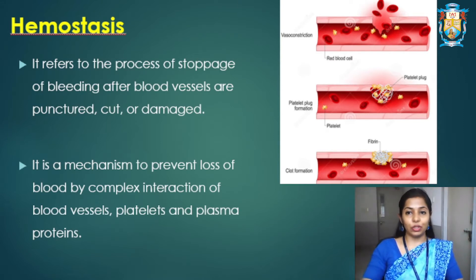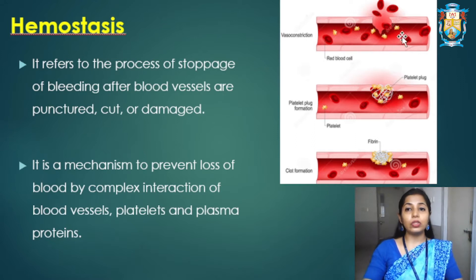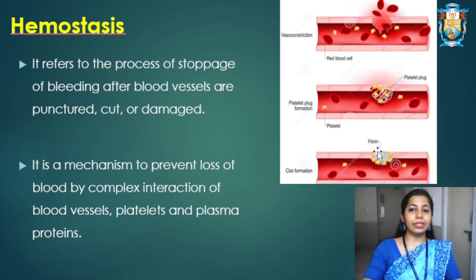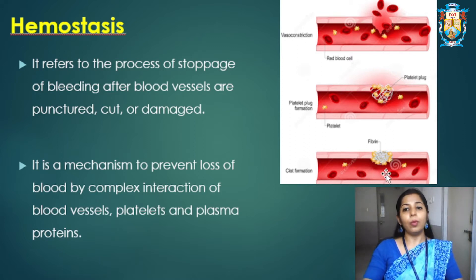As you can see in the picture, this is a blood vessel and it is injured or there is a cut. Due to this there is a loss of blood from that injured area. After some time there is a formation of a platelet plug to prevent further loss of blood, and as a result fibrin formation will take place so that no further blood loss occurs.